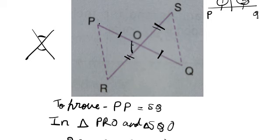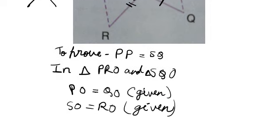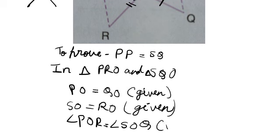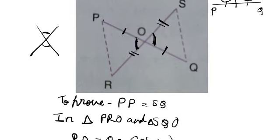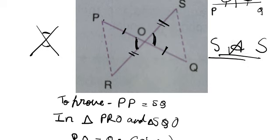So angle POR equals angle SOQ — vertically opposite angles. Now, to prove the congruency of the triangles: we have got two pairs of equal sides and one pair of equal angles, so we use SAS. This side and this side and this angle for triangle PRO, and SO, QO for triangle SQO — one pair of angles and two pairs of sides.